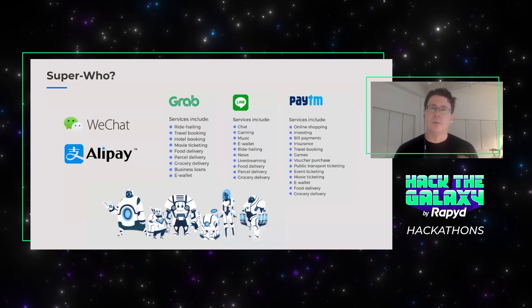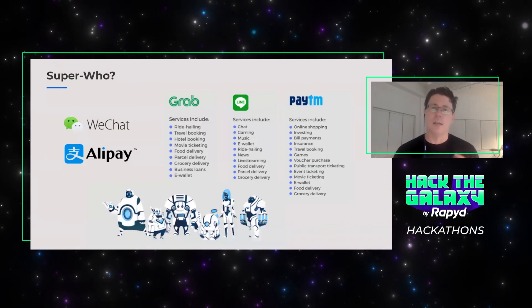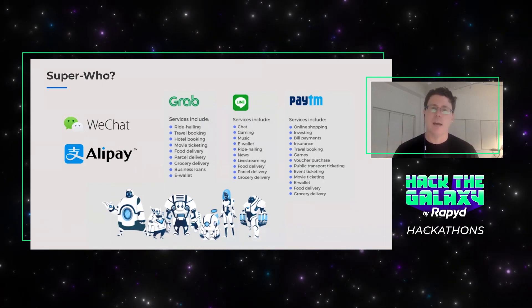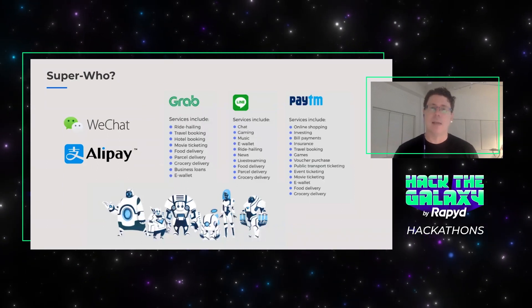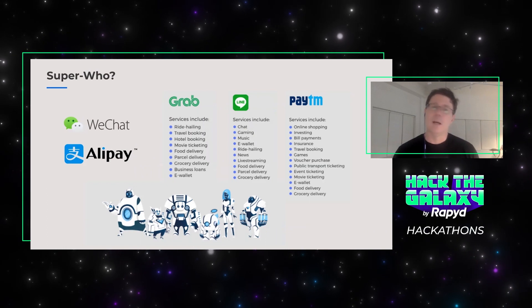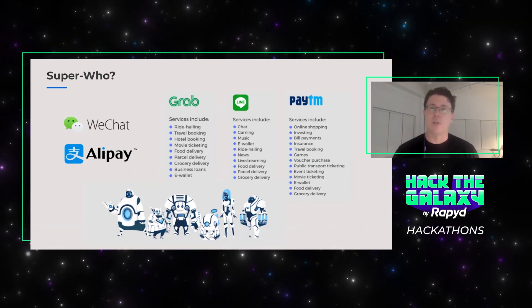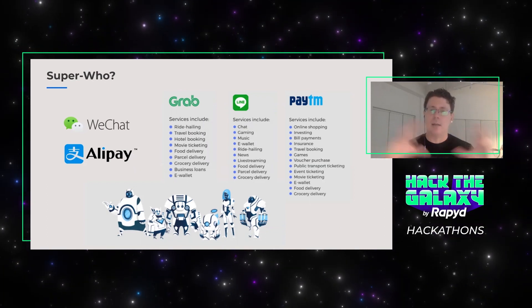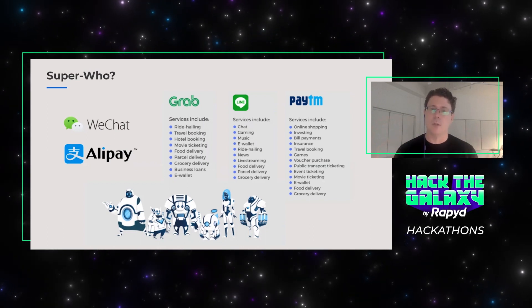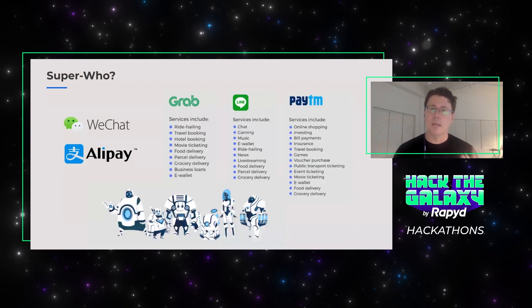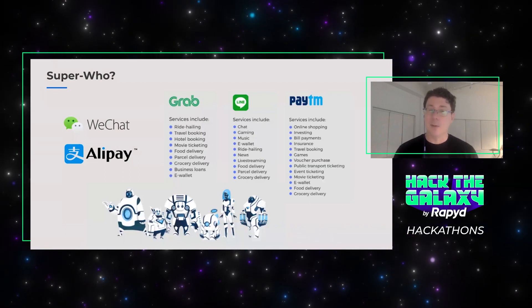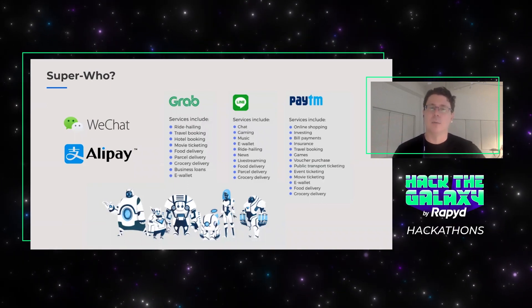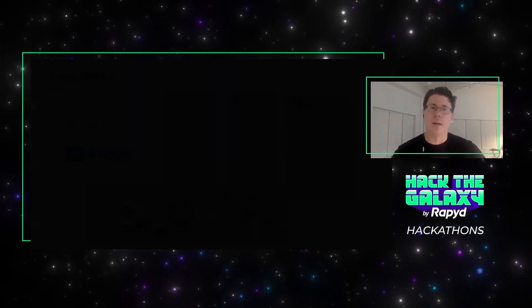What these companies did was build applications with a core feature — a hook, a flywheel — like ride sharing, chat, or online shopping, and then stacked more and more features on top. First, you'd never dare delete the app because something was always going to be useful to you. Second, you'd keep it on your deck and use it every day or at least several times a week. Downstream, they built in payments to monetize — through payments, investing, or lending — along with commerce capabilities and a viral hook to keep you moving around the ecosystem continuously. That's what we mean by a super app.